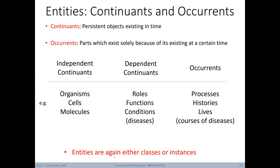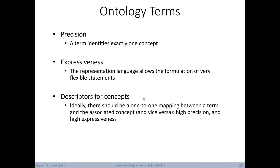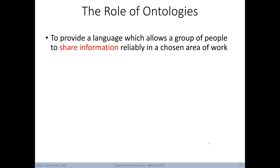To connect this back with semantic networks, you can think of entities as being either classes or instances. Now let's look at a few other terms from the perspective of ontologies. The first is precision. This describes whether a term identifies exactly one concept. In other words, is it avoiding ambiguity? Then we have the expressiveness of an ontology. This examines whether the representation language allows the formulation of very flexible statements. Next, we have the idea of descriptors for concepts. Basically, there should be a one-to-one mapping between a term and the associated concept, and vice versa. Ultimately, we want our ontology to have both high precision and high expressiveness. This is not the case for natural languages in general. You might come across the phrase parasitic interpretation. This indicates that there is an implied meaning that is not necessarily specified in an ontology.